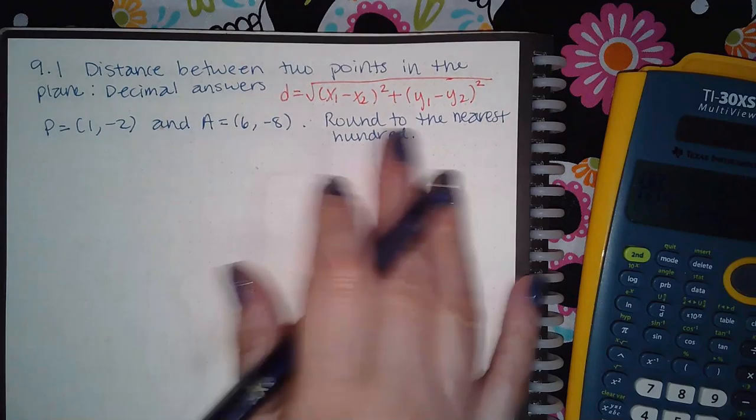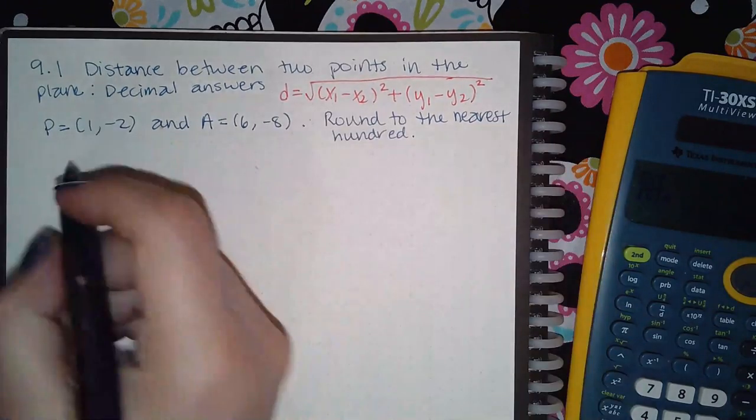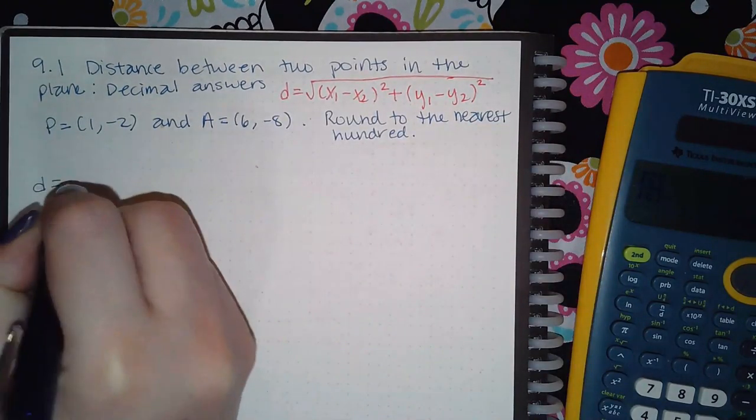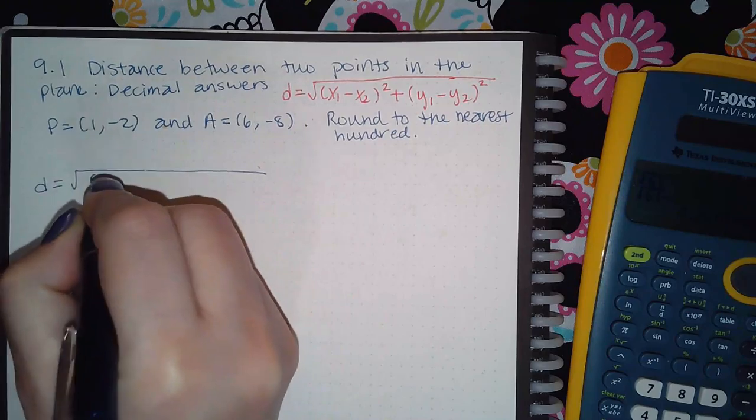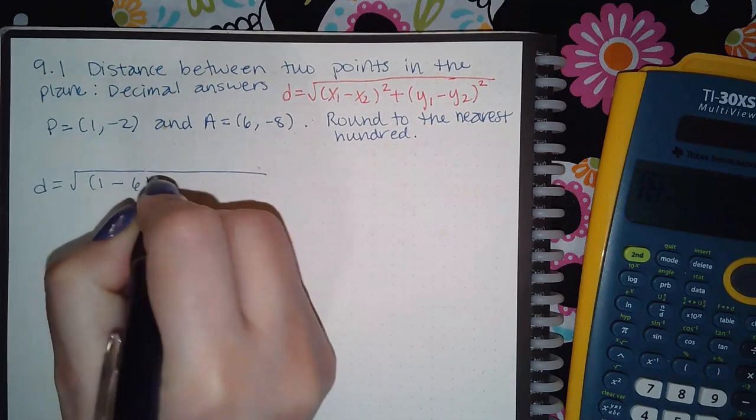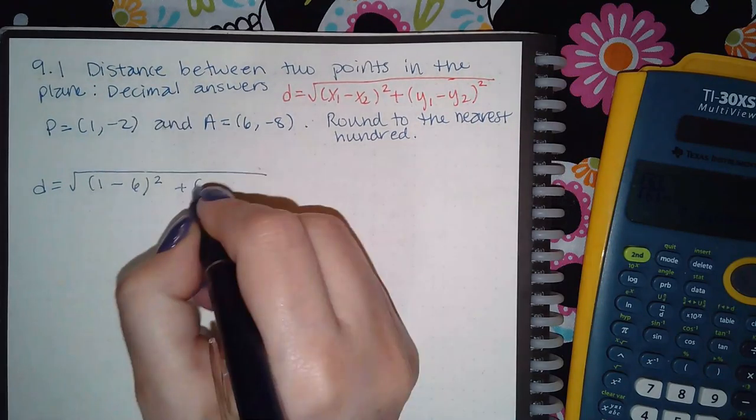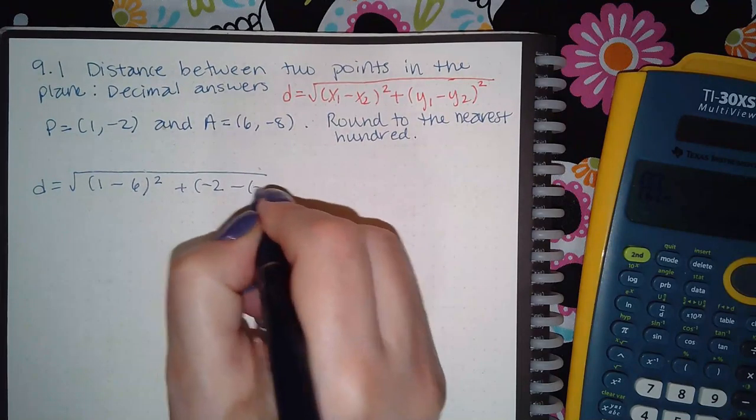So here I've got these points, but now I want the decimal. So we're going to say the distance is one x value minus the other x value squared, plus this y value minus that y value squared.